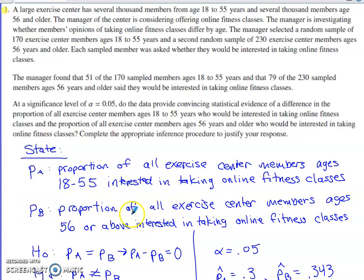My null hypothesis is going to be that there is no difference between these proportions, or that the difference is equal to zero. And then my alternative, I do have to pay attention to the phrasing. It says do we have convincing statistical evidence of a difference. It doesn't say that the younger members are more or less likely to be interested, it says is there a difference between the proportion of people who would be interested in taking these classes between the two different age groups.